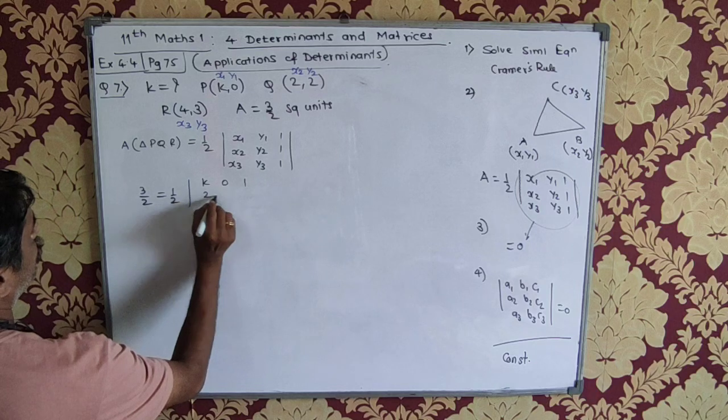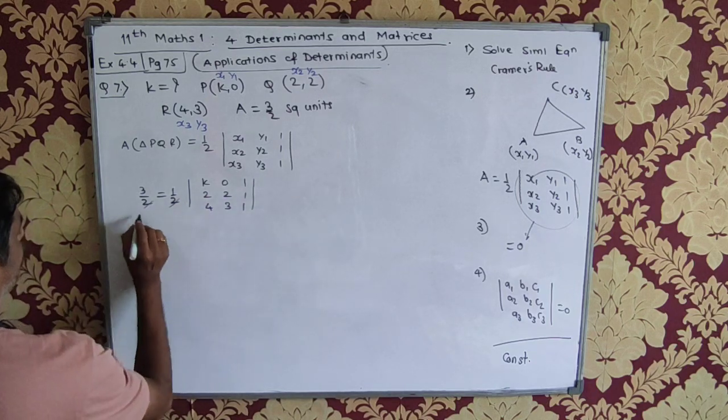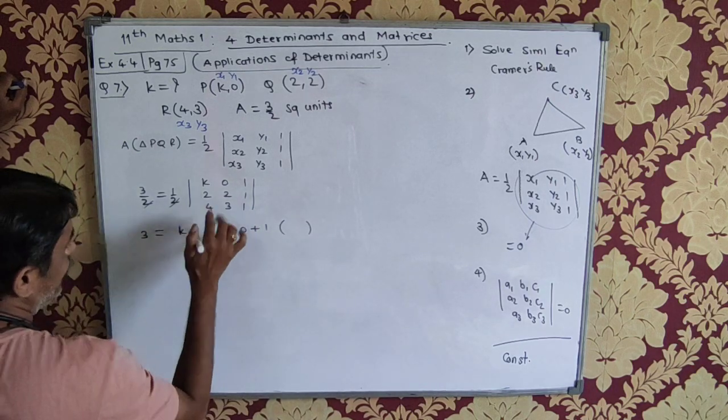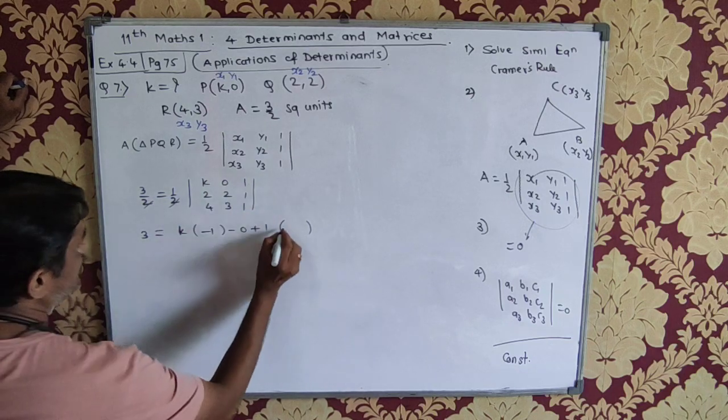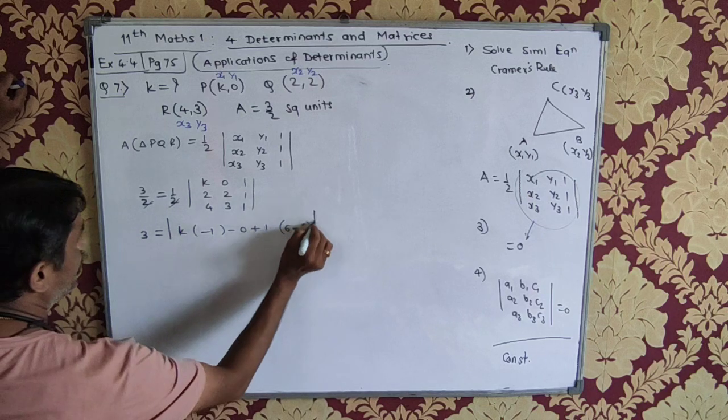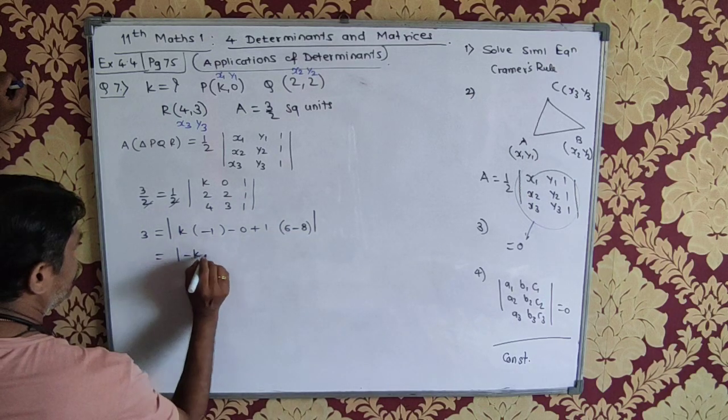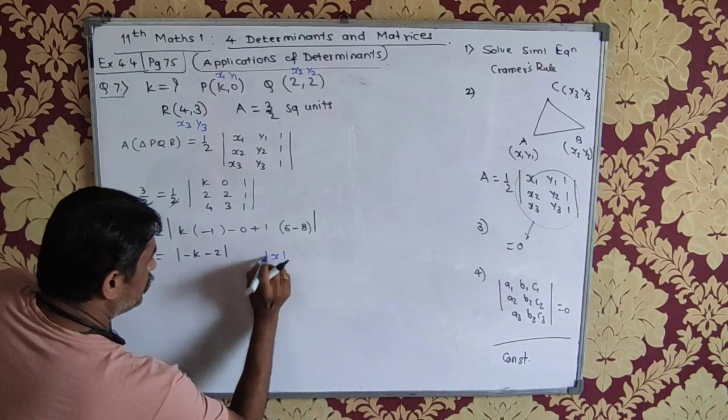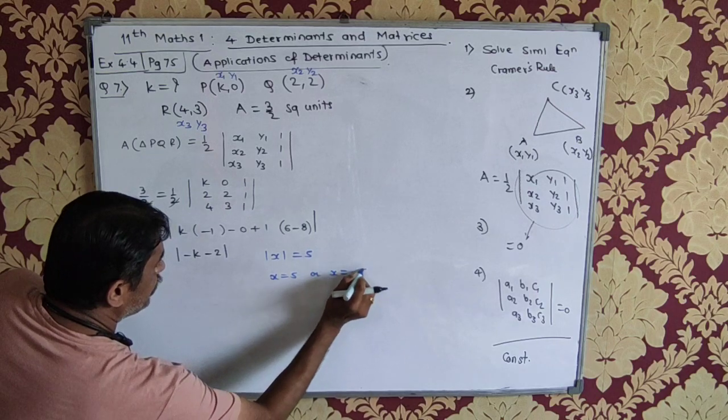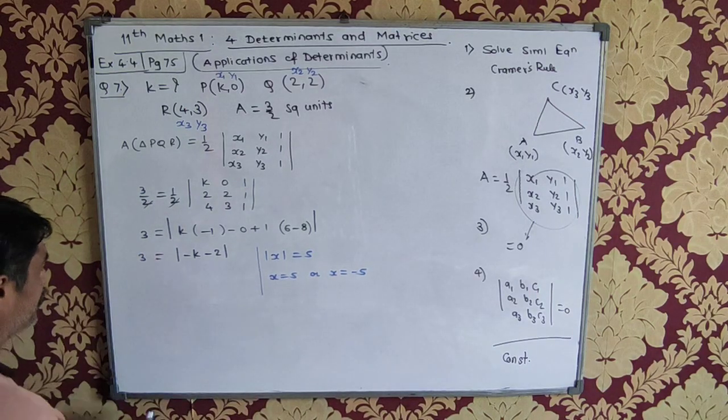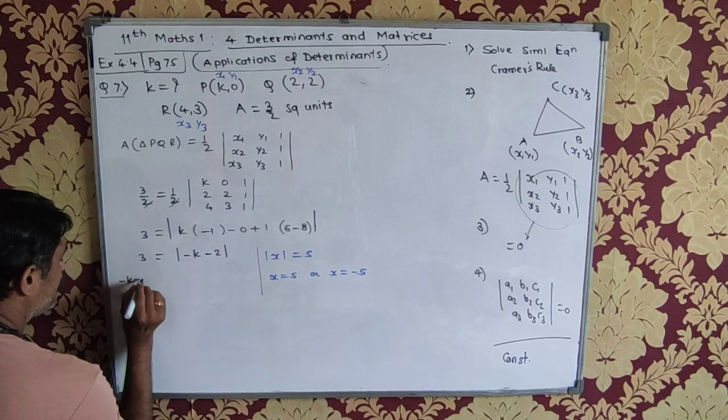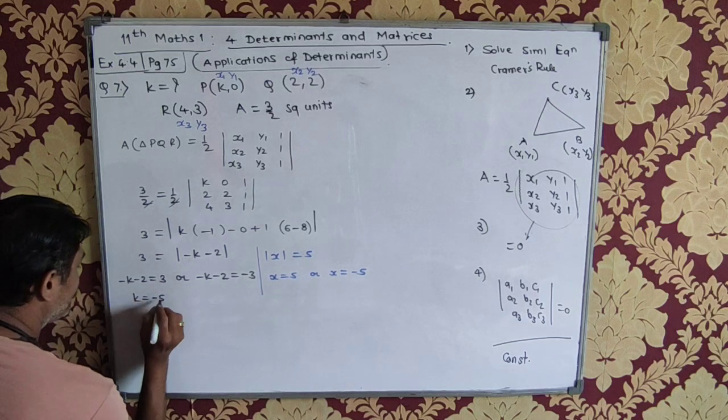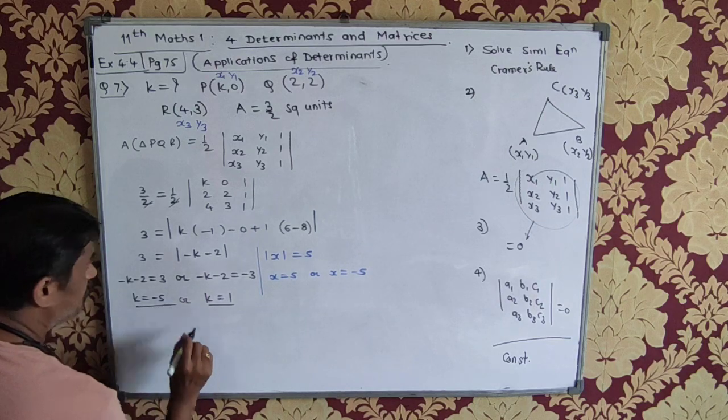3 by 2 is equal to half determinant k, 0, 1, 2, 2, 1, 4, 3, 1. Solve and we get the answer. 3 is equal to k into 2 minus 3, 0 goes, 1 into 6 minus 8. Now this has to be in the modulus. So this will become modulus of minus k minus 2 is equal to 3. Now when we say modulus of x is equal to 5, it means x is equal to plus 5 or x is equal to minus 5. Let us apply this over here. Modulus of minus k minus 2 is 3. So minus k minus 2 is equal to plus 3 or minus k minus 2 is equal to minus 3. That means k is equal to minus 5 or k is equal to 1. These are the two answers.